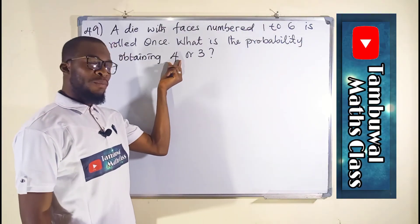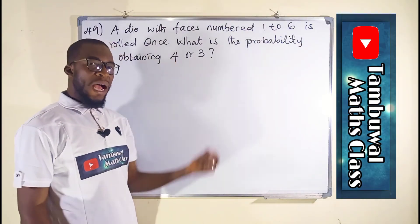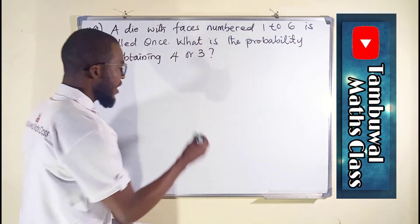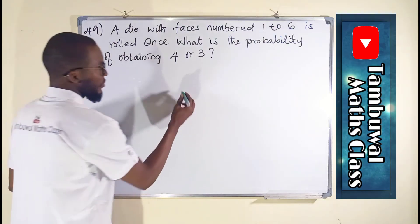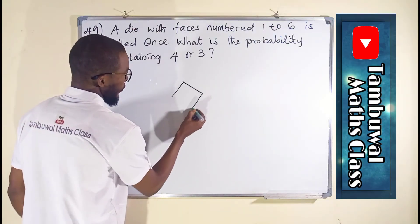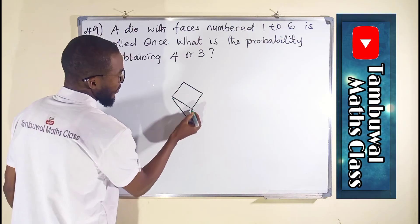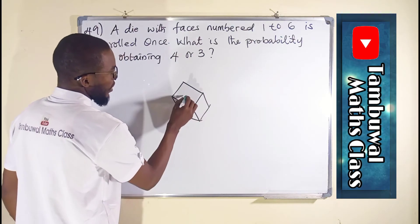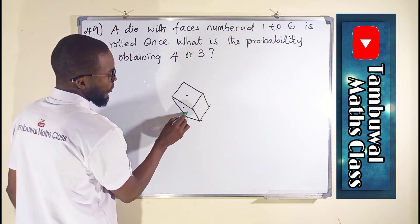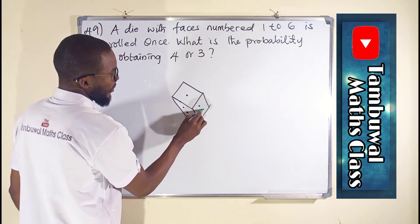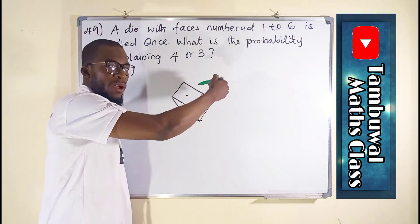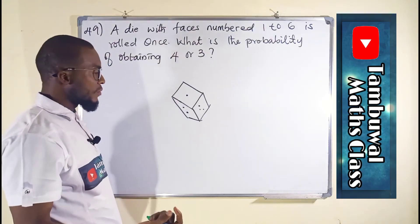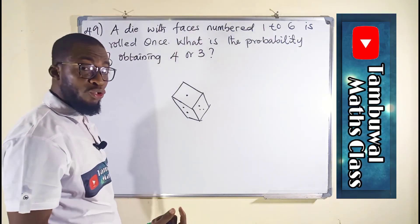Therefore, we are going to find the probability of obtaining 4 and add it to the probability of obtaining 3. A die has 6 faces — roughly, we have 1, 2, 3 on the visible sides, and in the back we have 4, 5, 6. So this die is rolled once, not twice.